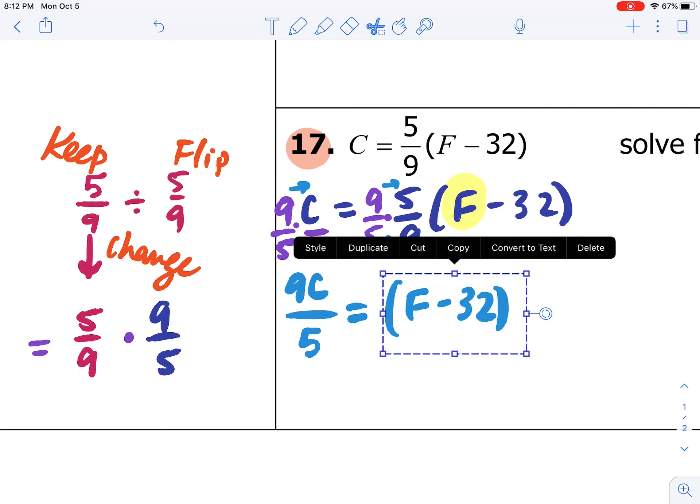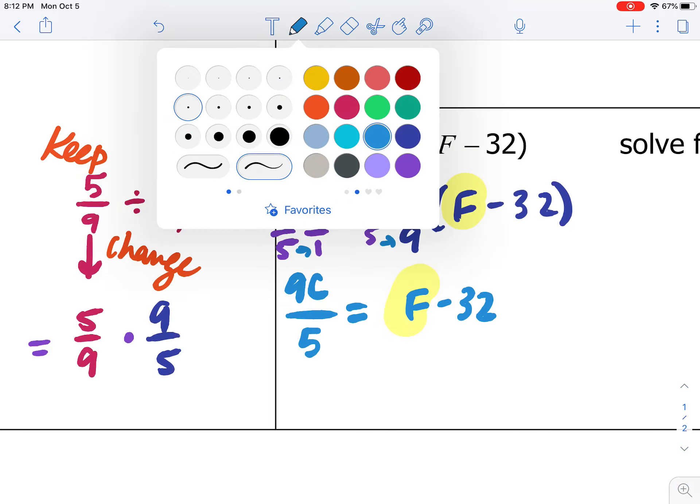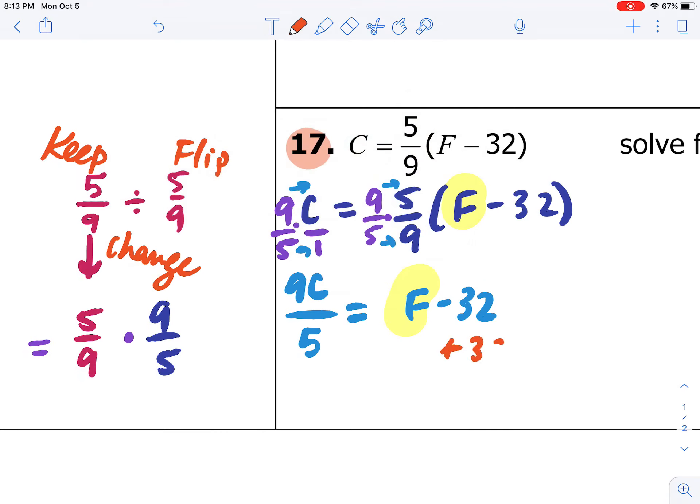And so now, we've gotten rid of the fraction on the right-hand side. Now that the fraction is gone, I don't need the parentheses anymore. And I need to remind myself what I'm solving for. I'm solving for F. So our last step in solving for F is we need to add 32 to both sides. So F equals 9C over 5 plus 32.